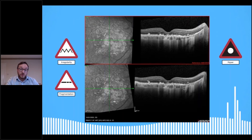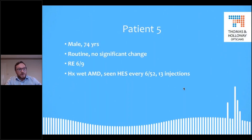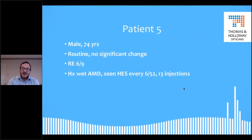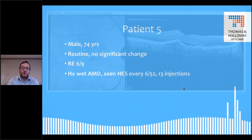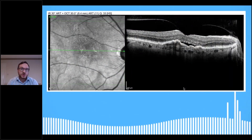Dry macular degeneration is one of those things that's incredibly common, and anybody with an OCT is going to see a lot of it. Patient five: male, 74 years old. Routine, no significant change. Right eye 6/9. This patient is a long-standing patient who has also had a history of wet macular degeneration for quite a while — they're seen at the hospital roughly every six weeks, and to date have had 13 injections. This was a good case study to show a fairly classic case of wet AMD. But let's use our iWay Code.